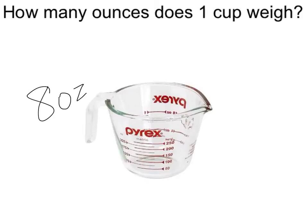How many ounces are in a pound? If you answered 16 ounces, you are correct.